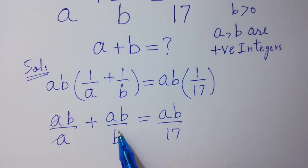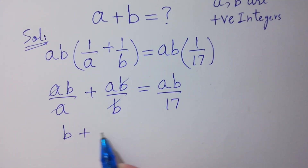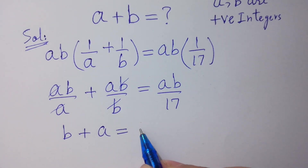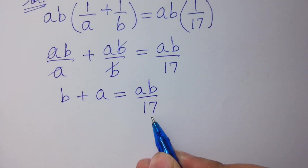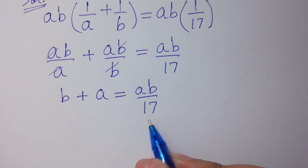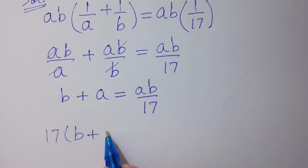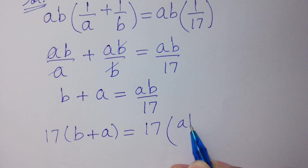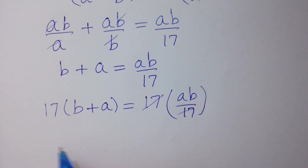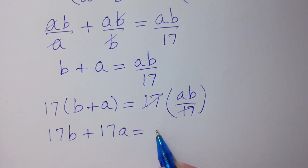The a's cancel and the b's cancel, giving us b plus a equals ab over 17. To get rid of 17, we multiply both sides by 17. So 17b plus 17a equals ab.